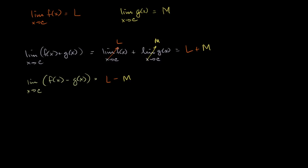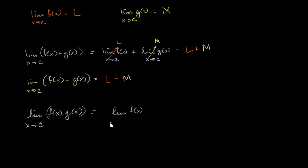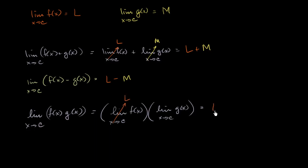Now what happens if you take the product of the functions? The limit of f of x times g of x as x approaches c — this is going to be equal to the limit of f of x as x approaches c, times the limit of g of x as x approaches c. This is a fairly intuitive property of limits, and it's just going to be equal to L times M.